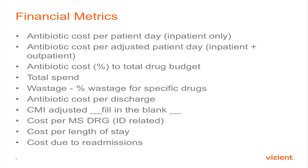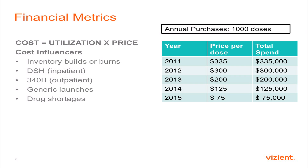Looking at wastage is good from a general stewardship principle standpoint — the percent of drugs that go in the trash is always surprising. Some systems can track cost per MS-DRG, pulling ID-related service line DRGs and looking at cost that way. Cost per length of stay and cost due to readmissions are other options, though cost due to readmissions is very difficult to calculate.